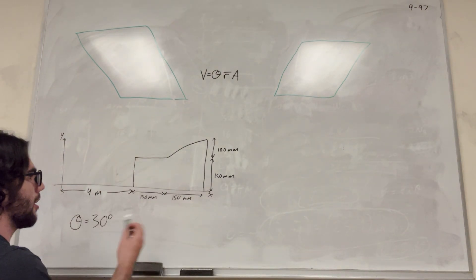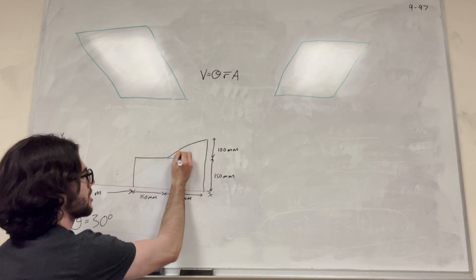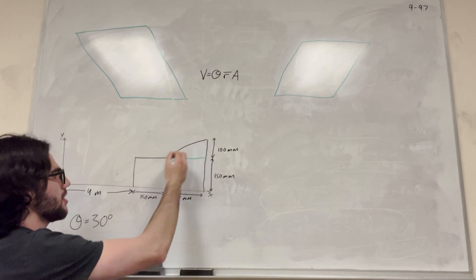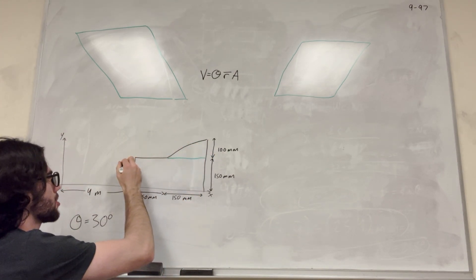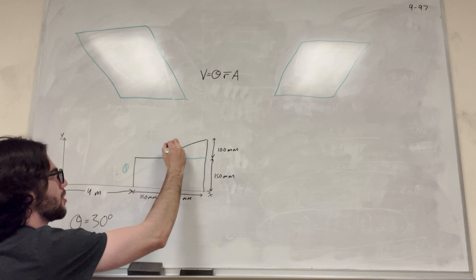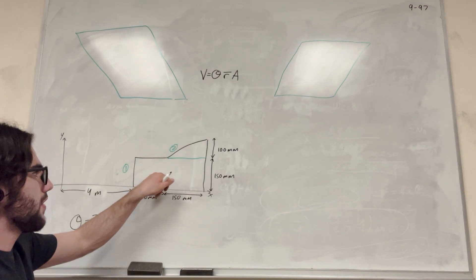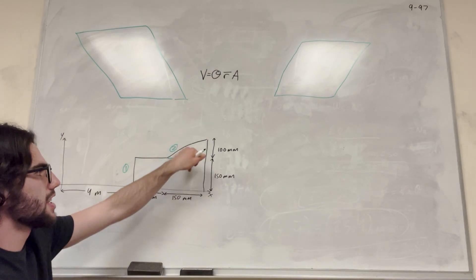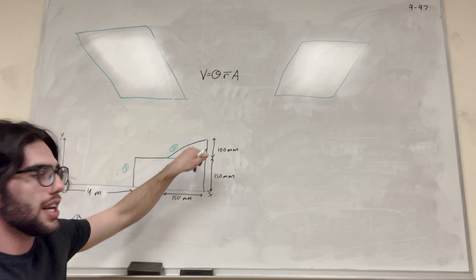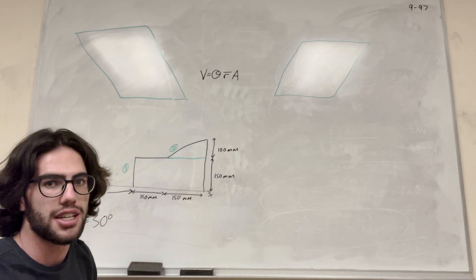We want things that are easy to work with, so how about a rectangle and a triangle? We can break it into those two parts. Now we have a rectangle and a triangle — we're going to label this one 1 and label this one 2.